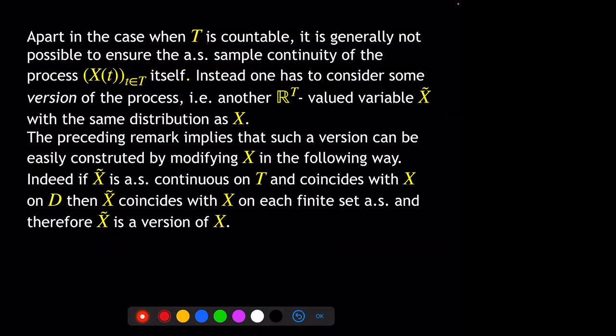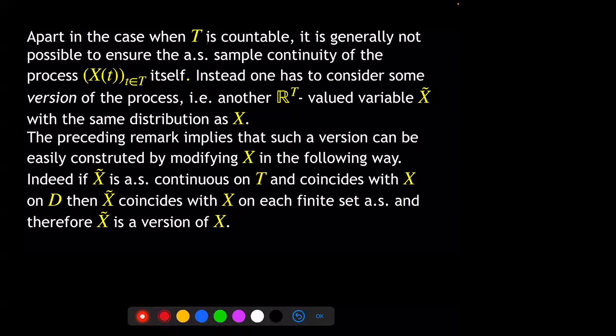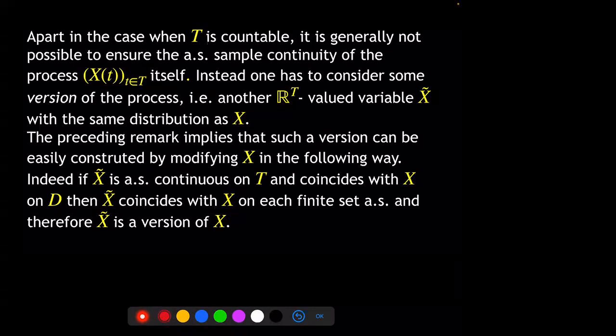More precisely, if X-tilde is continuous on the full set T and coincides with X on D, then automatically X-tilde coincides with X on each finite set, because of the preceding property of the existence of subsequences giving regularity. Therefore X-tilde is a version of X. This gives a simple way of building almost surely continuous versions of X by modifying the process starting from its values on the countable dense subset.